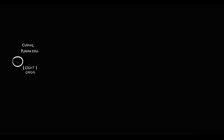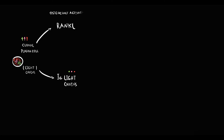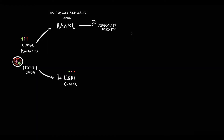To describe the full pathogenesis of multiple myeloma, let's suppose that plasma cells produce broken immunoglobulins that have only light chains. We also know that plasma cells produce osteoclast activating factors, such as RANKL, that stimulates osteoclast proliferation and activity. And exactly these two products of plasma cell activity are the key components in the pathogenesis of multiple myeloma.